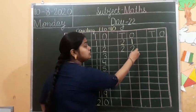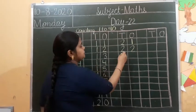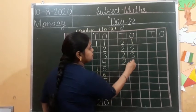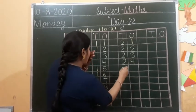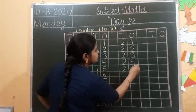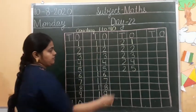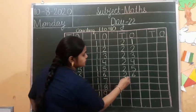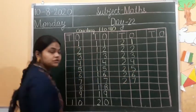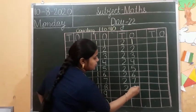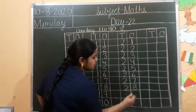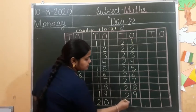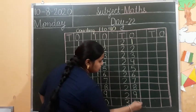2, 2 — tell me — 22. 2, 3 — 23. 2, 4 — 24. 2, 5 — 25. 2, 6 — 26. 2, 7 — 27. 2, 8 — 28. 2, 9 — 29. 3, 0 — 30.